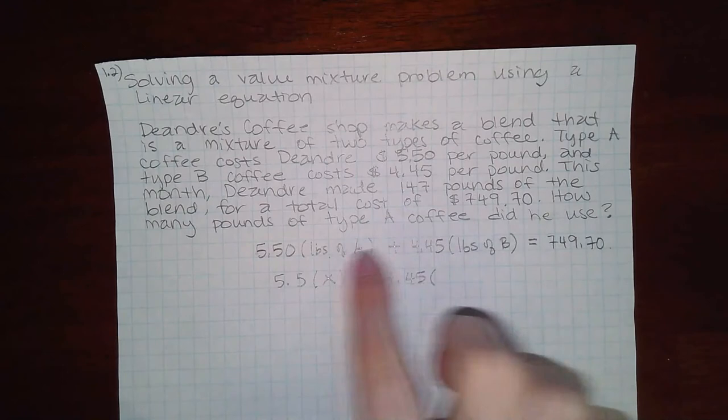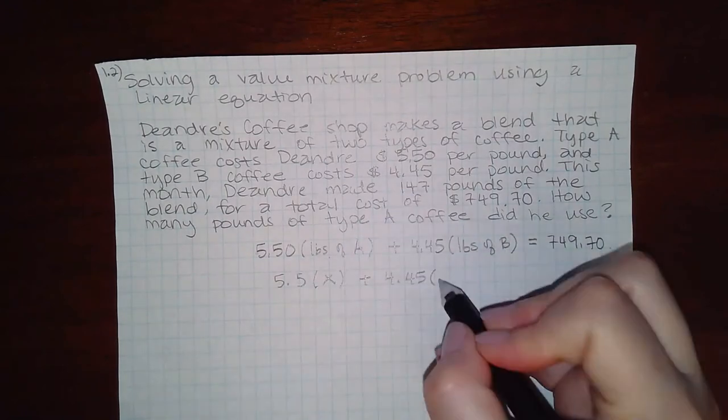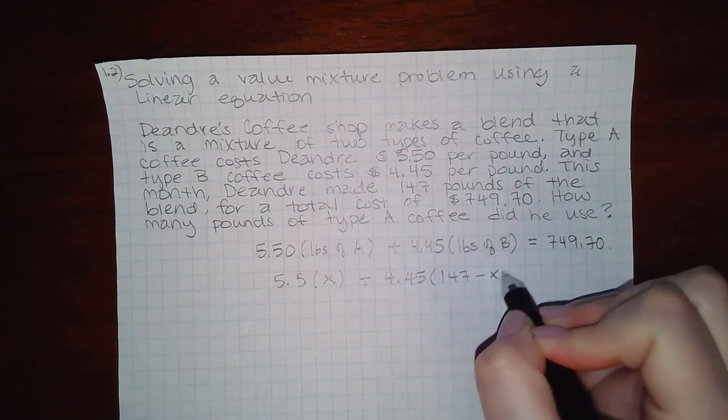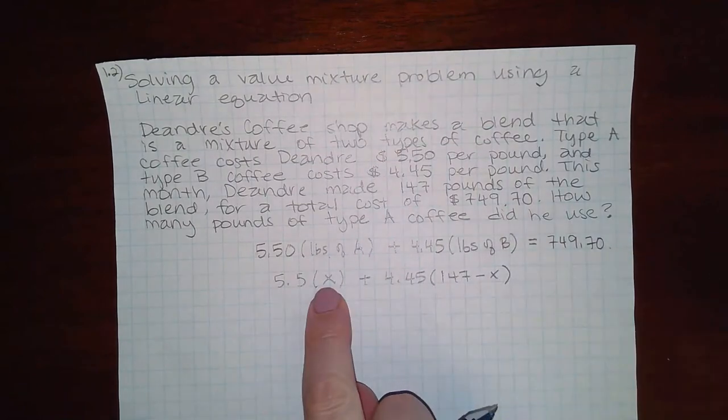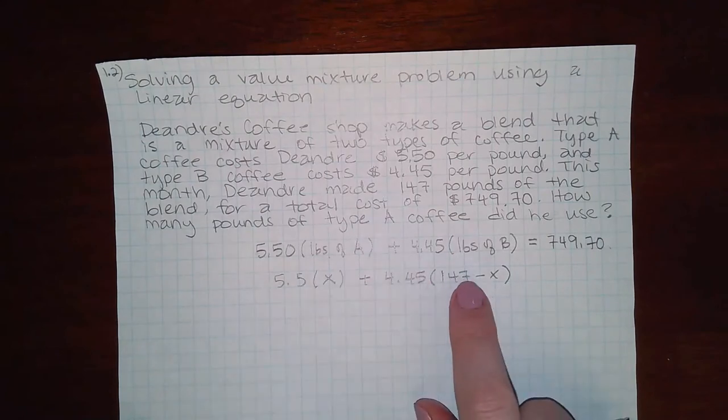But since I know these two guys' relationship, I know that together they make 147 pounds, this would be 147 minus X. So however much of type A he used, the rest of the 147 pounds would be used for type B.